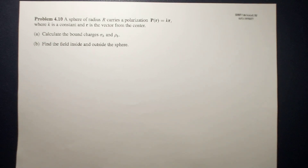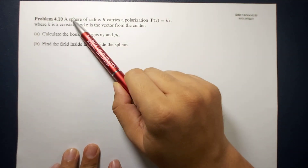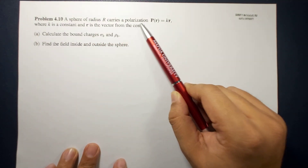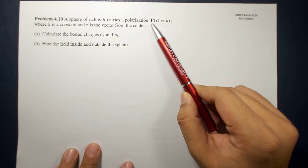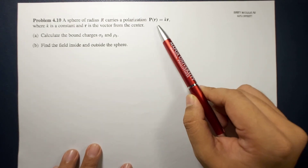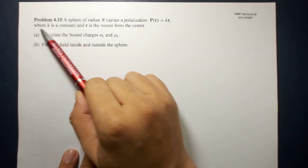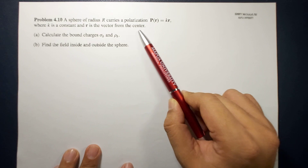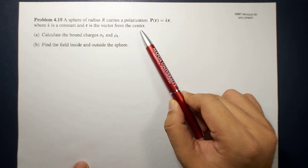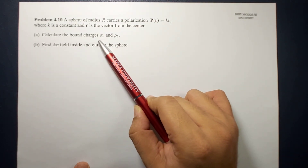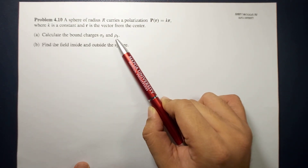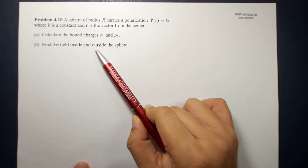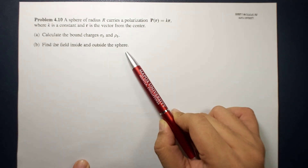So the problem reads: a sphere of radius R carries polarization equal to P = K·R (where K is a constant and R is the vector from the center). Letter A: calculate the bound charges σ_B and ρ_B, and find the electric field inside and outside the sphere.